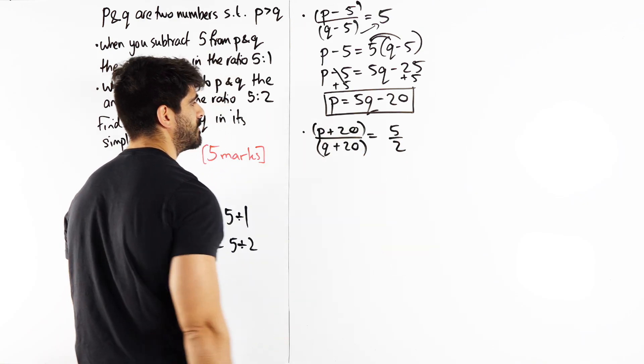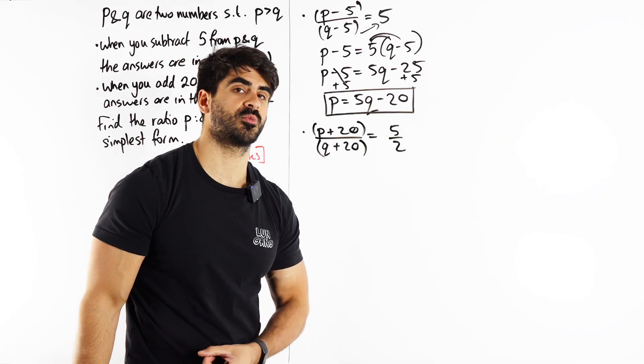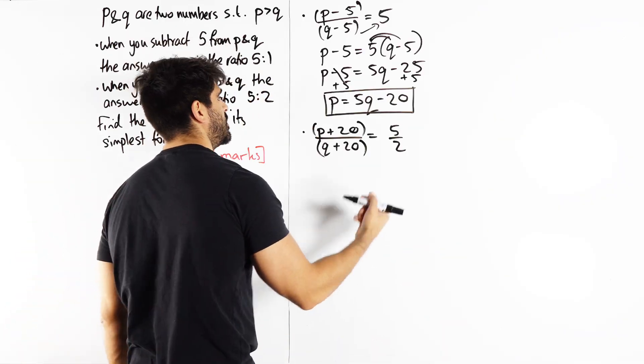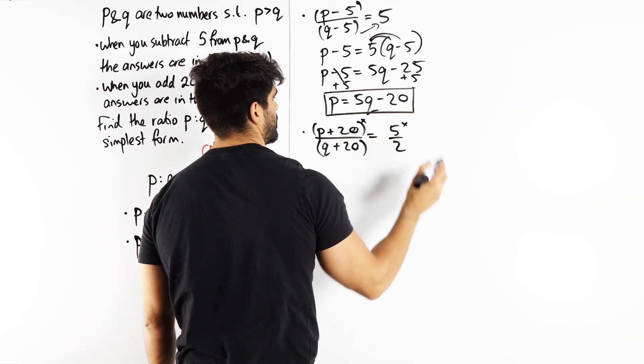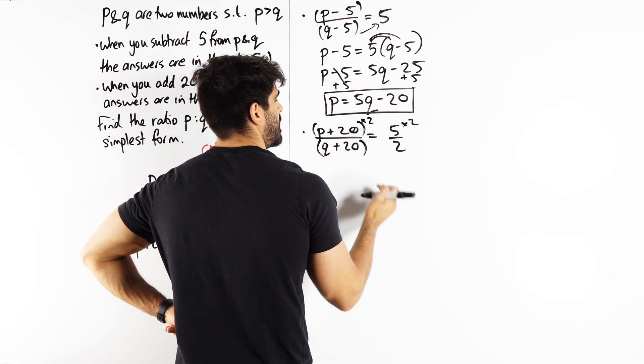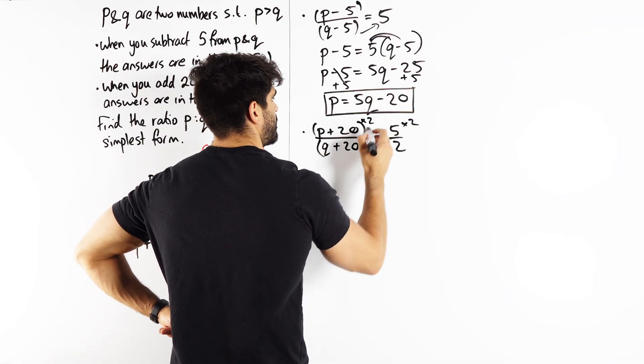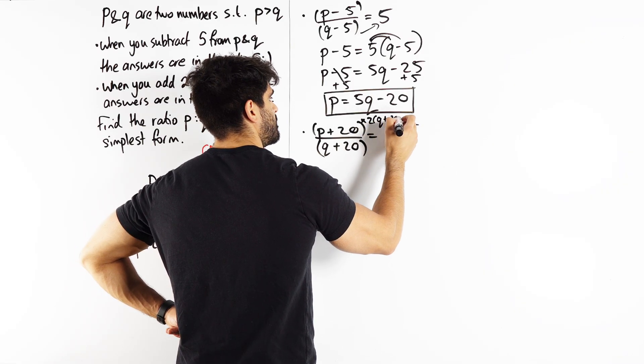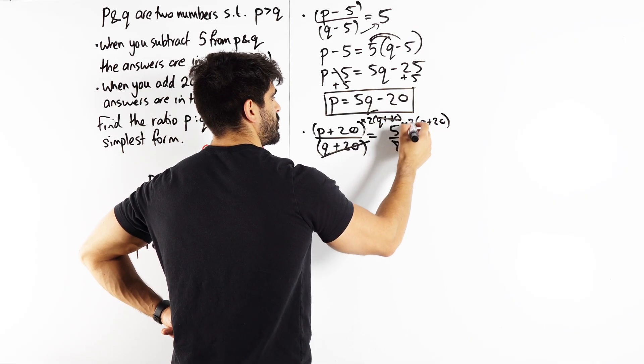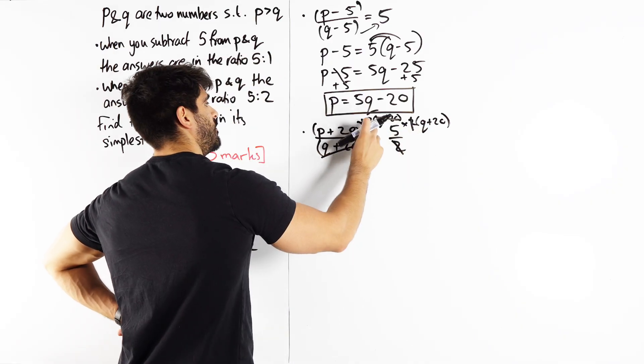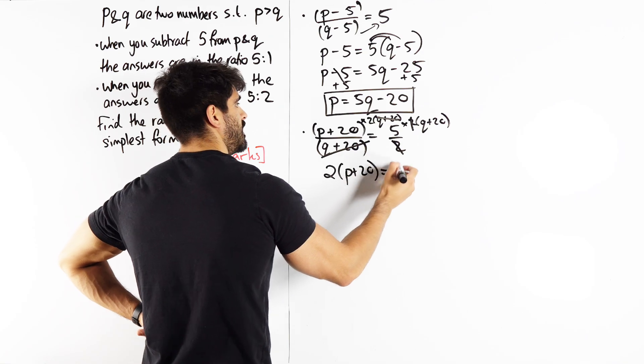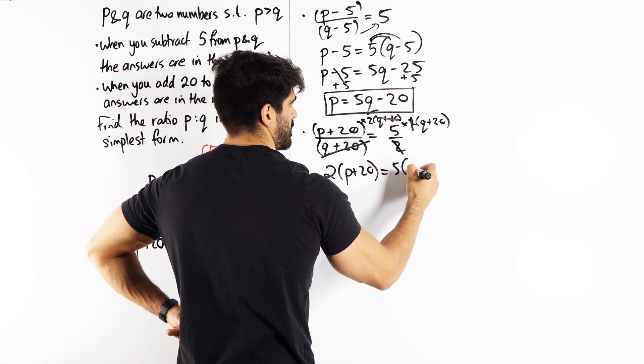And we're going to protect. Now here, not so simple. We can't just times through by this, we have to times through by the 2 as well. So you guys might know it's cross multiplication, which I don't like saying at GCSE because it draws up many misconceptions here. But we're multiplying both sides by this denominator of 2 and multiplying both sides by this denominator of Q plus 20. All right, the Q plus 20 cancels and here the 2 cancels. So we're left with 2 lots of P plus 20 is 5 lots of Q plus 20.